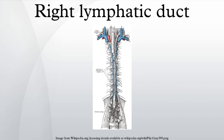The right lymphatic duct, about 1.25 cm in length, courses along the medial border of the scalenus anterior at the root of the neck. The right lymphatic duct forms various combinations with the right subclavian vein and right internal jugular vein. A right lymphatic duct that enters directly into the junction of the internal jugular and subclavian veins is uncommon.